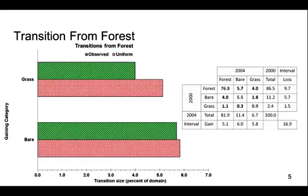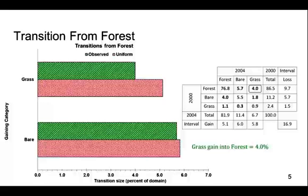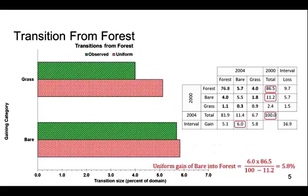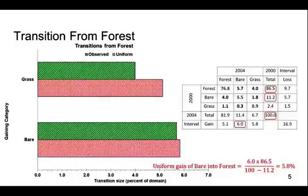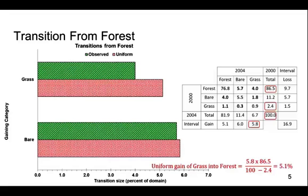Here is the figure from the uniform gain figure sheet of the Pontius Matrix 41 file. There are two bars for each gaining category, both of which show the size of the transition from category 1 to the gaining category. The green bars are the observed transition sizes — this is the observed transition size from forest to bare, and this is the observed transition size from forest to grass. If the gaining category were uniform, then the size of the transition from forest to the gaining category would be the red bar. This uniform transition is calculated using the category's overall gain times the initial size of forest divided by the area that is not the gaining category at the initial time. The values in red show the entries used to compute the size of the uniform transition from forest to bare, and from forest to grass.